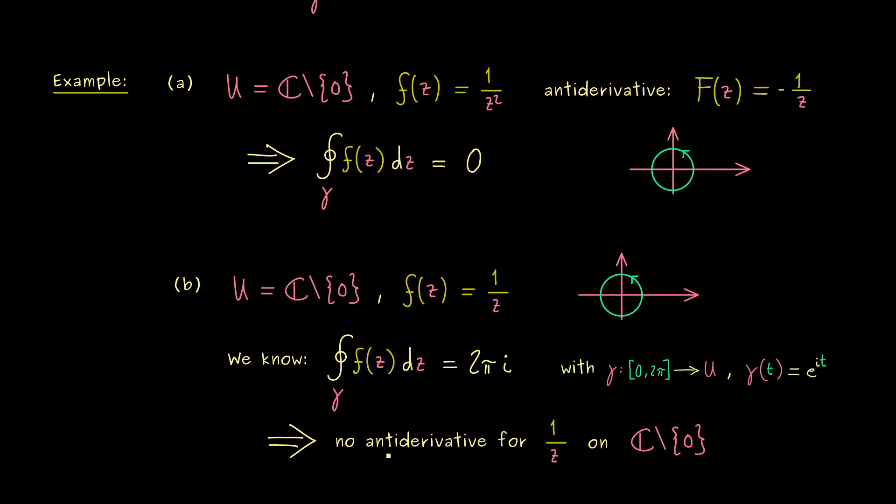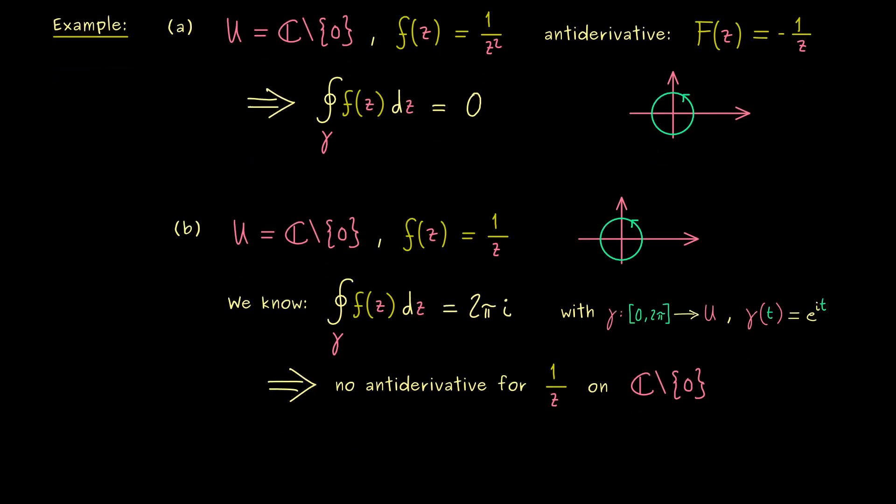However at this point you can ask the question, is the logarithm we have defined not an anti-derivative of 1 over z? And indeed it seems a little bit strange but the answer for the question is yes the logarithm is an anti-derivative of the function 1 over z.